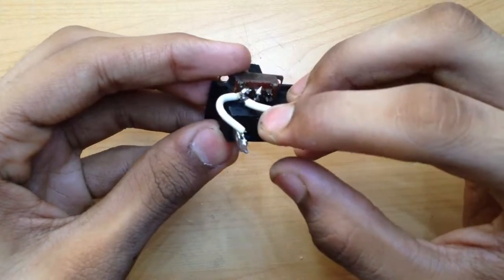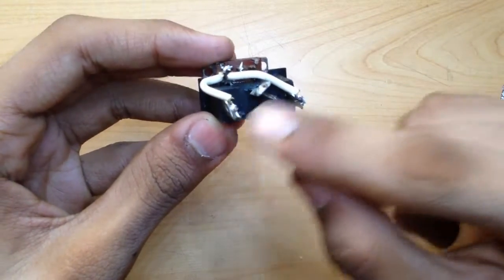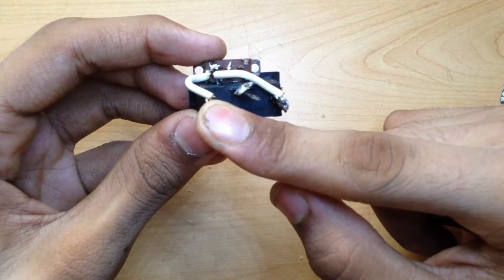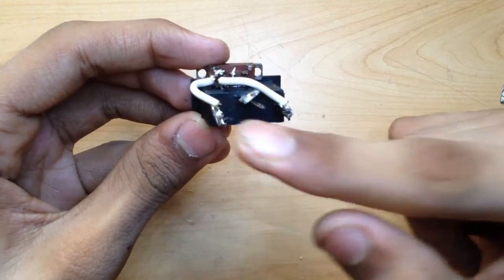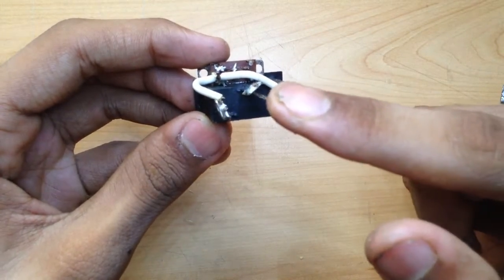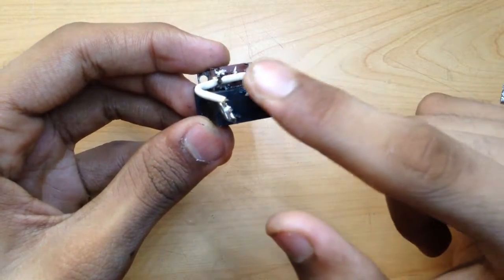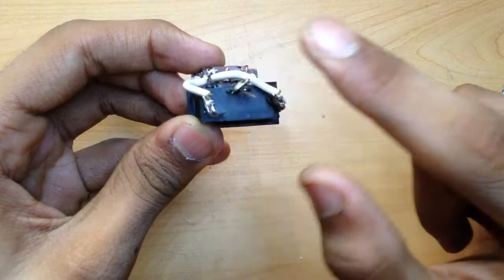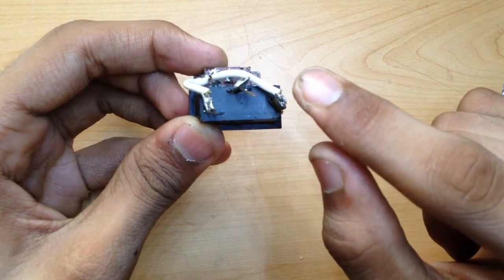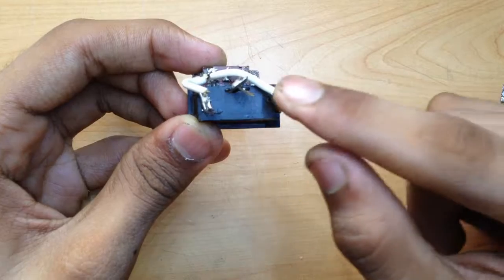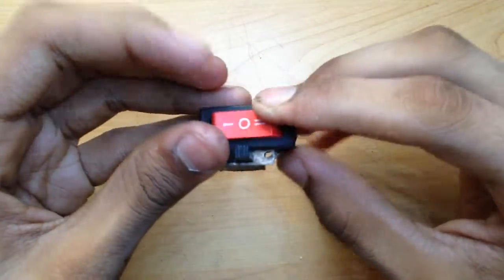I also have to connect this to this. So one terminal of the LED will go here, actually from the battery. Through the battery, the positive terminal will go here and the negative terminal of the battery will go here. Then another LED, the same way, will go this way. So there you will have that.